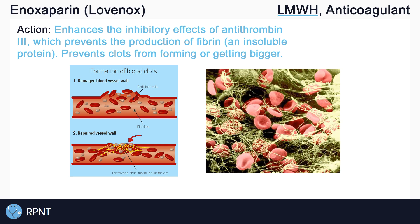Fibrin is essential to clotting because it forms long threads in a mesh-like structure that help to trap platelets and blood cells. So again, enoxaparin works similarly to heparin by inhibiting clotting factors 2a and 10a, ultimately decreasing clotting.